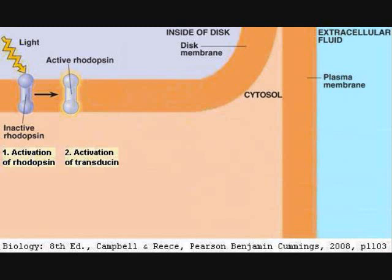The second step is activation of transducin. Opsin is a member of a large family of related receptor proteins called GPCRs, or G-protein coupled receptors. Like all other members, opsin has seven transmembrane alpha helices and a cytosolic region that interacts with a particular heterotrimeric G-protein. For opsin, the G-protein is transducin. The activation of rhodopsin involved a conformational change in the opsin protein, but the change was not limited to the region directly surrounding the retinal — it also affected the cytosolic region of opsin.